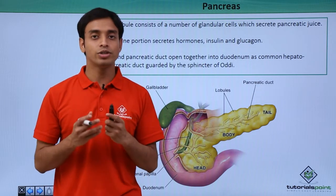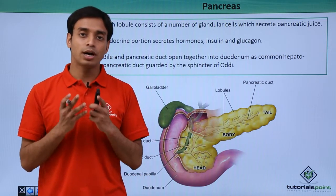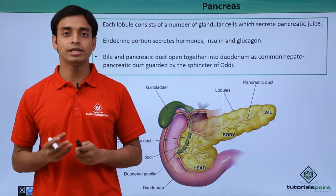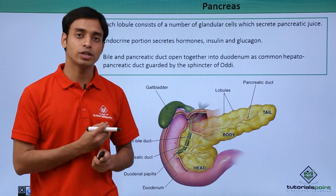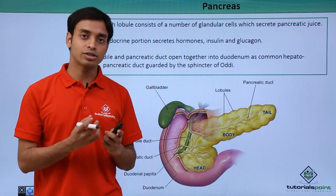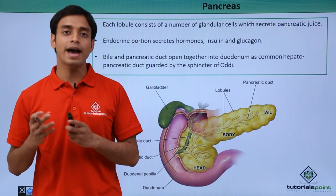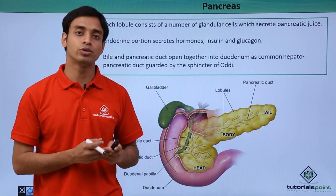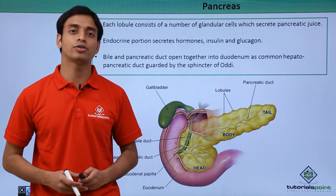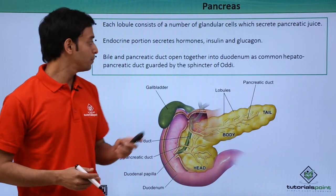These pancreatic juices contain various digestive enzymes which are responsible for breaking down complex food materials into simpler ones that can be easily digested and absorbed into the bloodstream, and hence can be utilized by the cells and tissues of our body to produce energy.